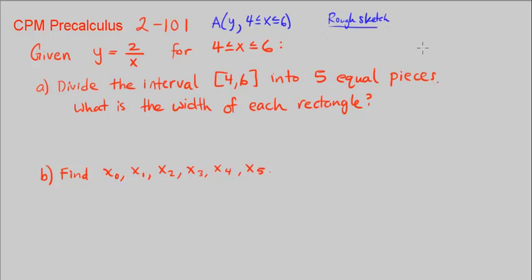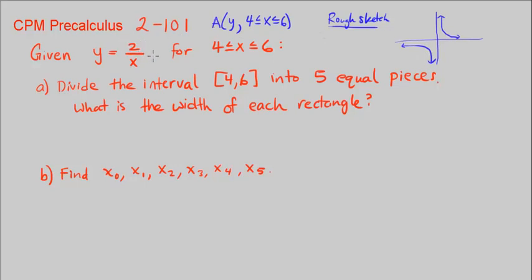You can use your calculator to do this. It's basically going to look similar to 1 over x, but we know that 1 over x is the parent graph, and we're multiplying it by 2, so we're vertically stretching it by 2. We're going from 4 to 6, and we're looking for this area in between 4 and 6.